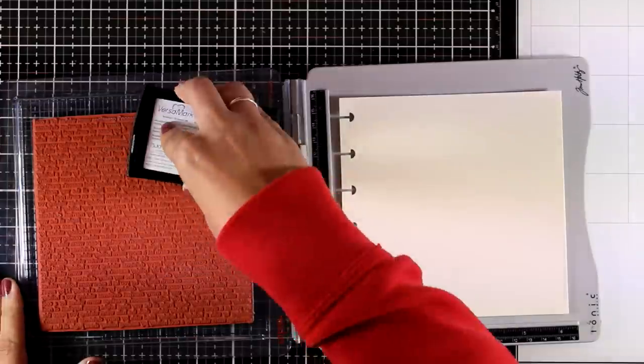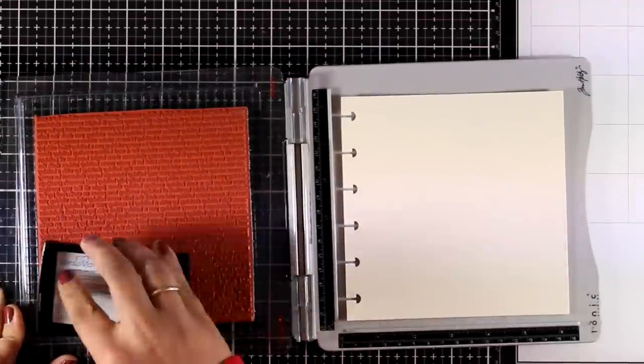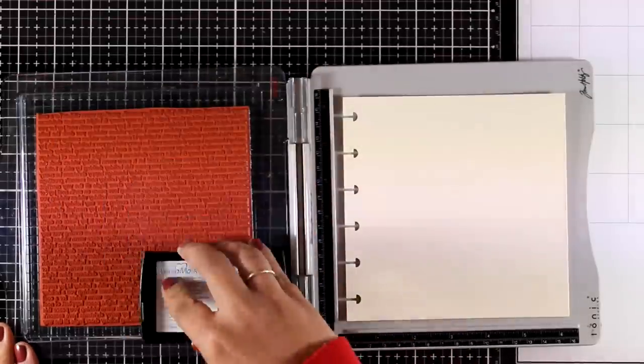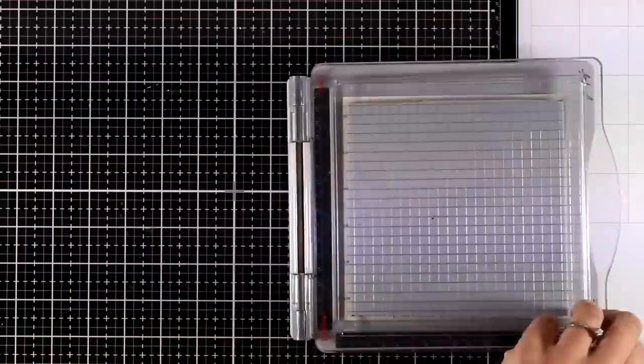So I have prepared my page with my anti-static pouch and now I'm going to apply some VersaMark and stamp on top of my page. I'm not going to repeat the process one more time since this is the background and I really like it if I see some imperfections here and there.